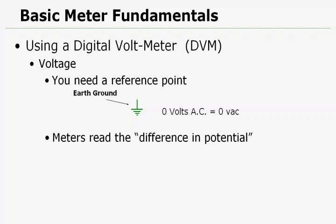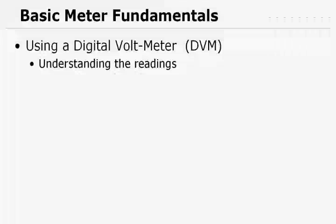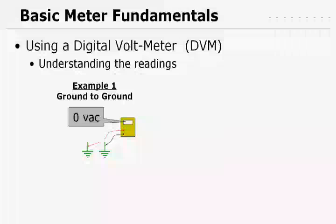Meters read the difference in potential when they read voltage. So to understand the readings, I have a couple examples. In this first example, reading from ground to ground with a voltmeter, we're going to get a reading of zero volts AC.